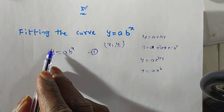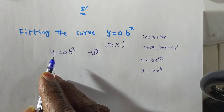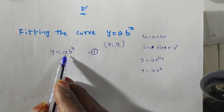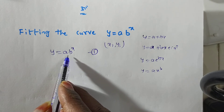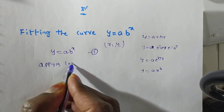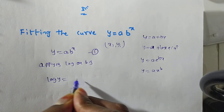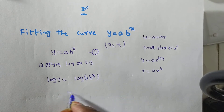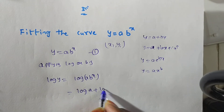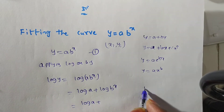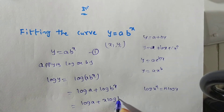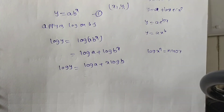Before fitting, we need the normal equations. For y = ab^x, observe that a and b are two unknowns in a product form, so it is better to apply log on both sides. Applying log: log y = log(ab^x) = log a + log(b^x) = log a + x·log b, using the rule x^n → n·log x.